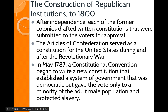After independence, each former colony drafted written constitutions submitted to voters for approval. The Articles of Confederation served as the U.S. constitution during and after the Revolutionary War, but it simply wasn't working. In May 1787, a Constitutional Convention began to write a new constitution. This established a democratic system of government, though it only gave the vote to a minority of adult males and protected the institution of slavery.